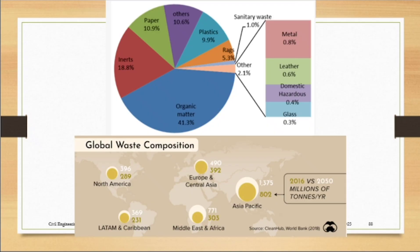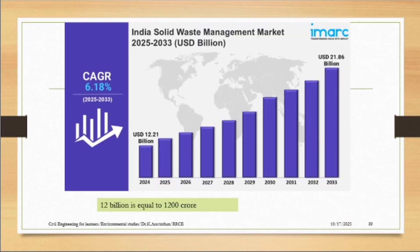According to the country and continent, which has the highest solid waste? Looking at the data, Asia Pacific has the largest percentage of solid waste generation, followed by Middle East and Africa. These are the statistics on the amount of solid waste generated by continent.